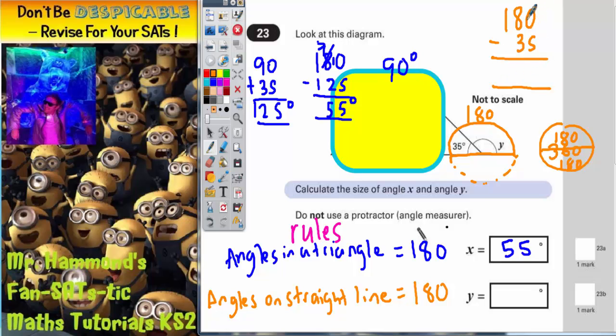So 0 take away 5 we can't do, so we need to borrow one. 10 take away 5 is 5. 7 take away 3 is 4. And 1 take away nothing is 1. So this missing angle here must be 145 degrees because those two will now make 180. So angle y is 145 degrees.